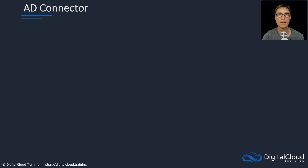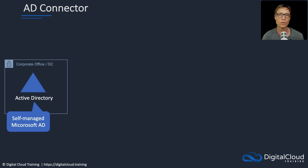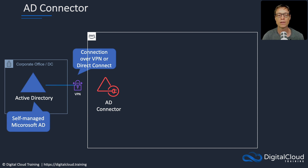The next service is AD connector. In this scenario, let's say you've got a self-managed Active Directory running in your corporate office or data center — one that you manage inside your company. This is where your identities are stored and you want to continue using it as one place where all user accounts are stored. You can set up a VPN or Direct Connect connection, and then use the AD connector service in AWS to connect your Active Directory to it, allowing authentication and authorization to many different services in AWS.